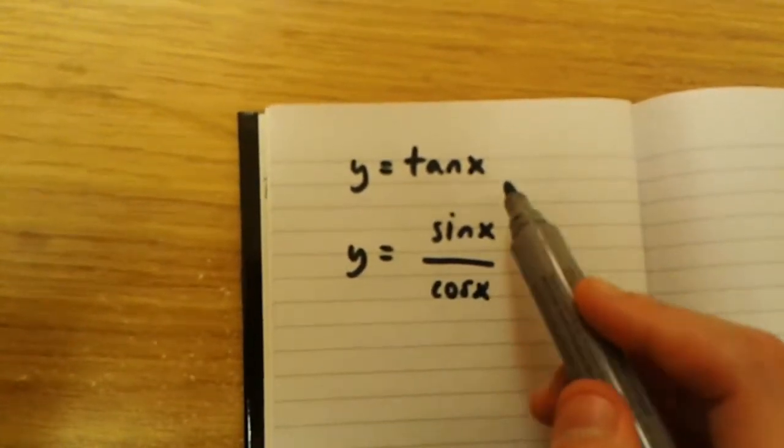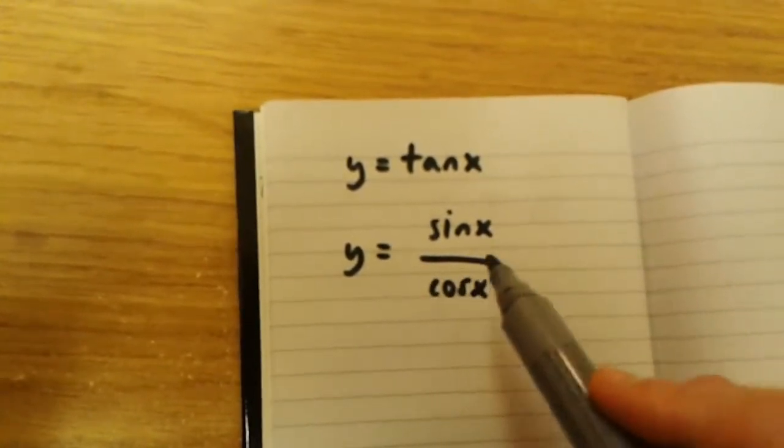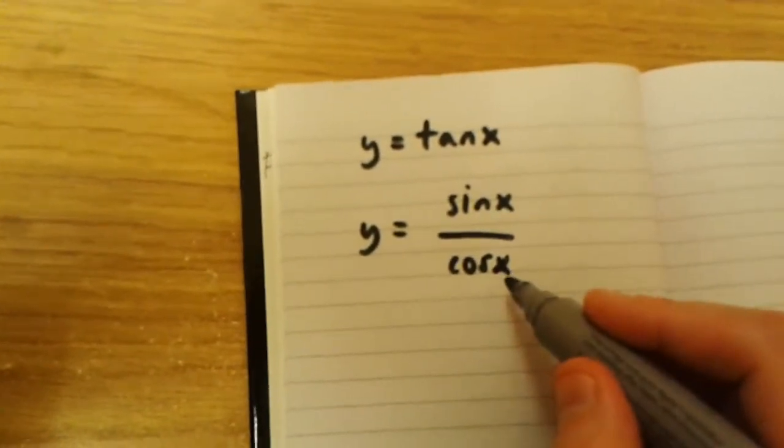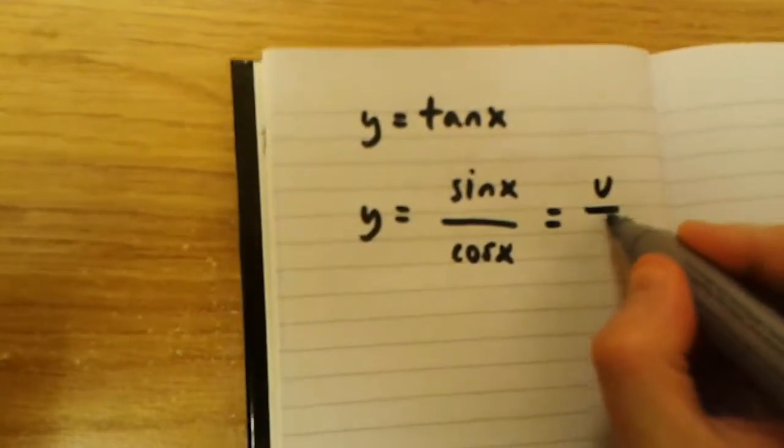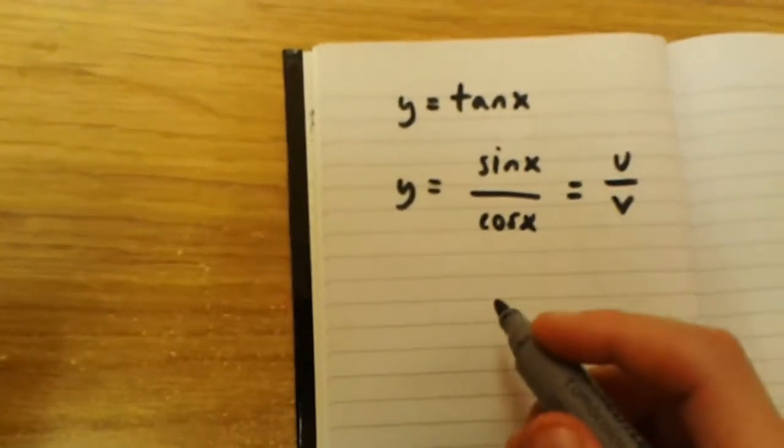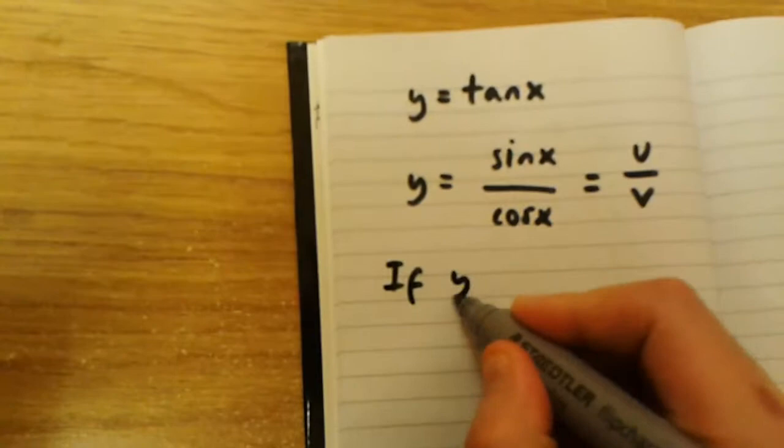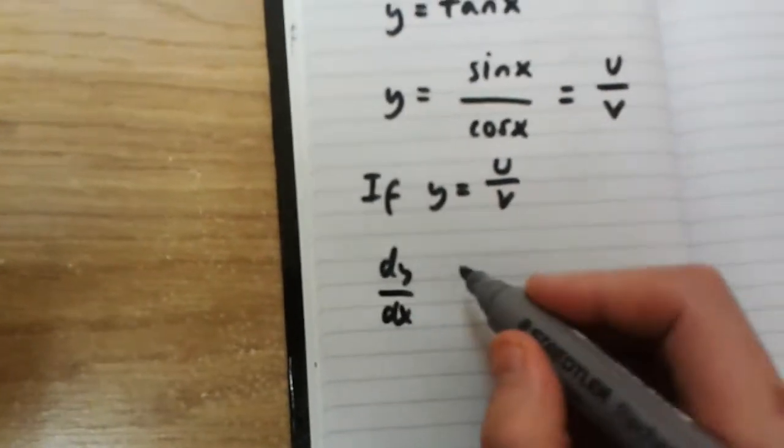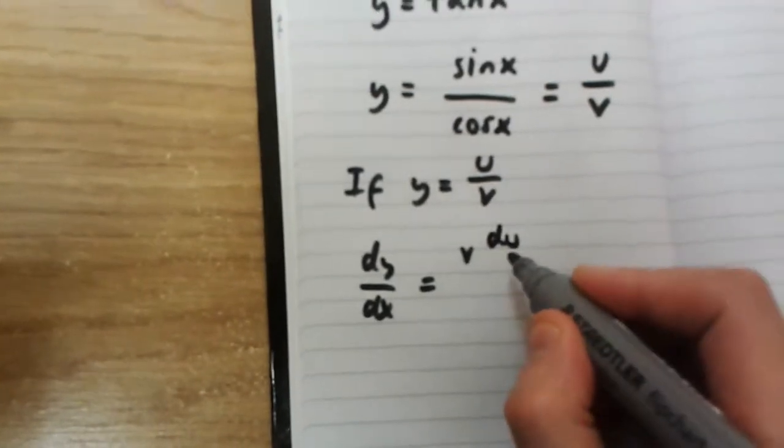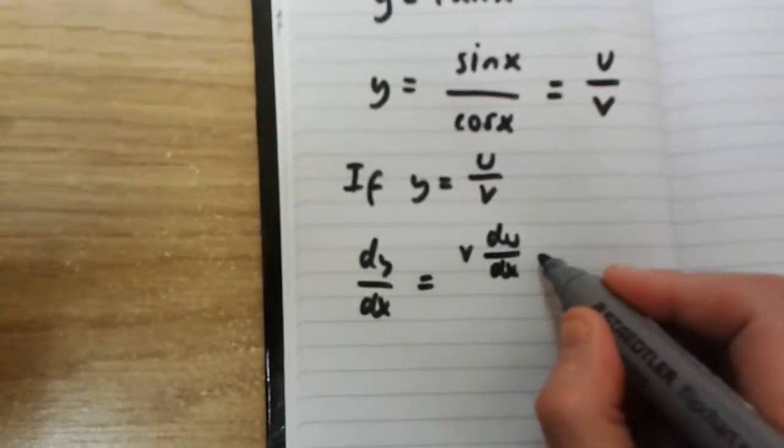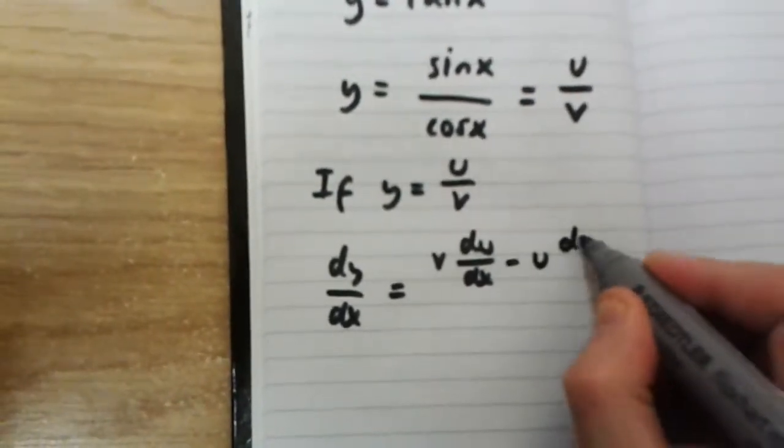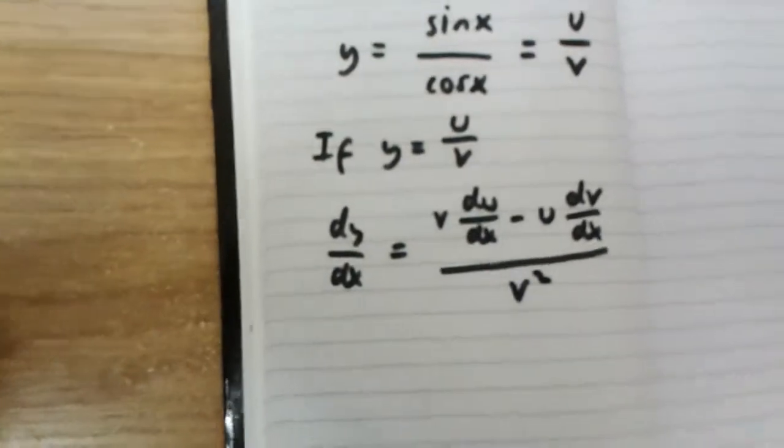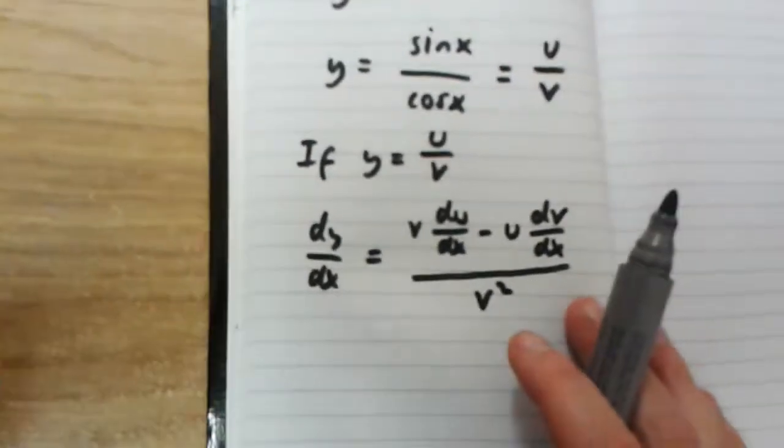Because tan x is equal to sin x over cos x, y is equal to sin x over cos x. Now we're going to write sin x over cos x is equal to u over v. We should know that if y is u over v, dy over dx is equal to v multiplied by du over dx, minus u multiplied by dv over dx over v squared. This is called the quotient rule.